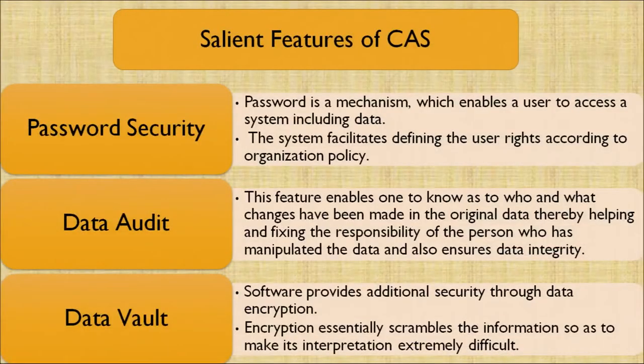What are the salient features of computer-aided systems? Number one: password security. Second: data audit. Third: data vault. Password is a mechanism which enables a user to access a system including its data. The system facilitates defining user rights according to the organization's policy. Therefore, password security helps protect our data from third-party users.